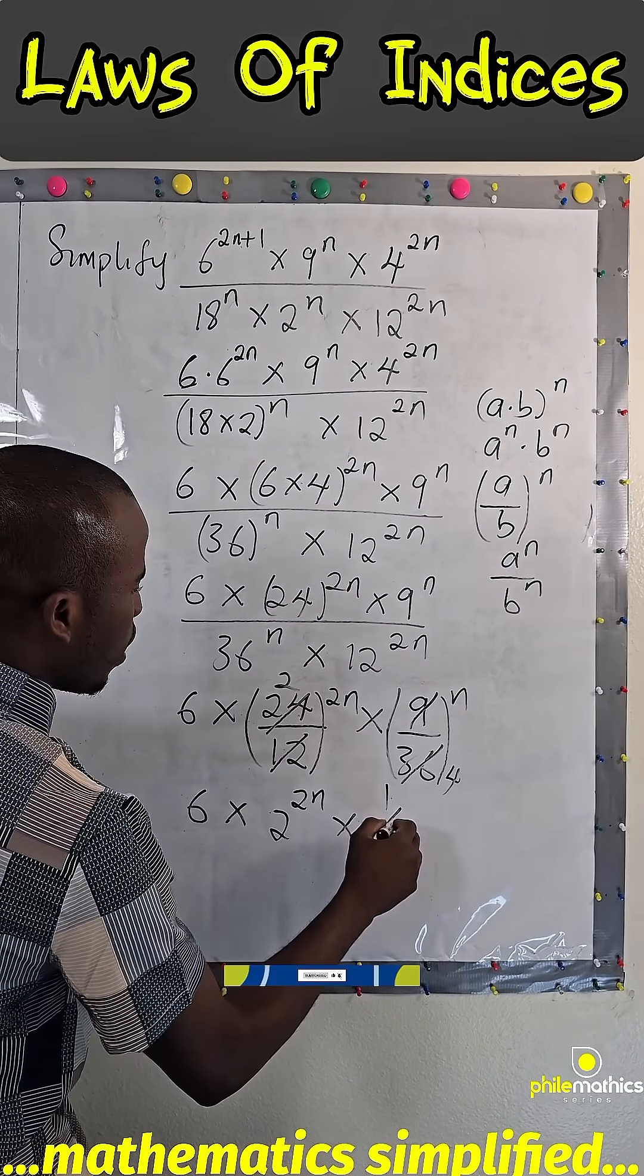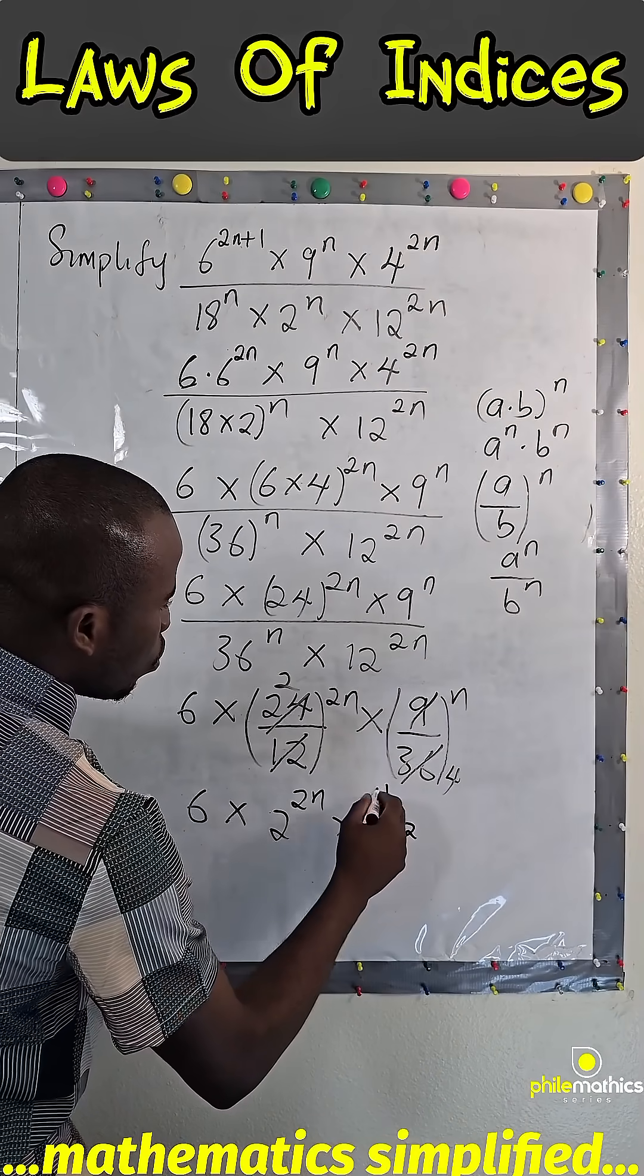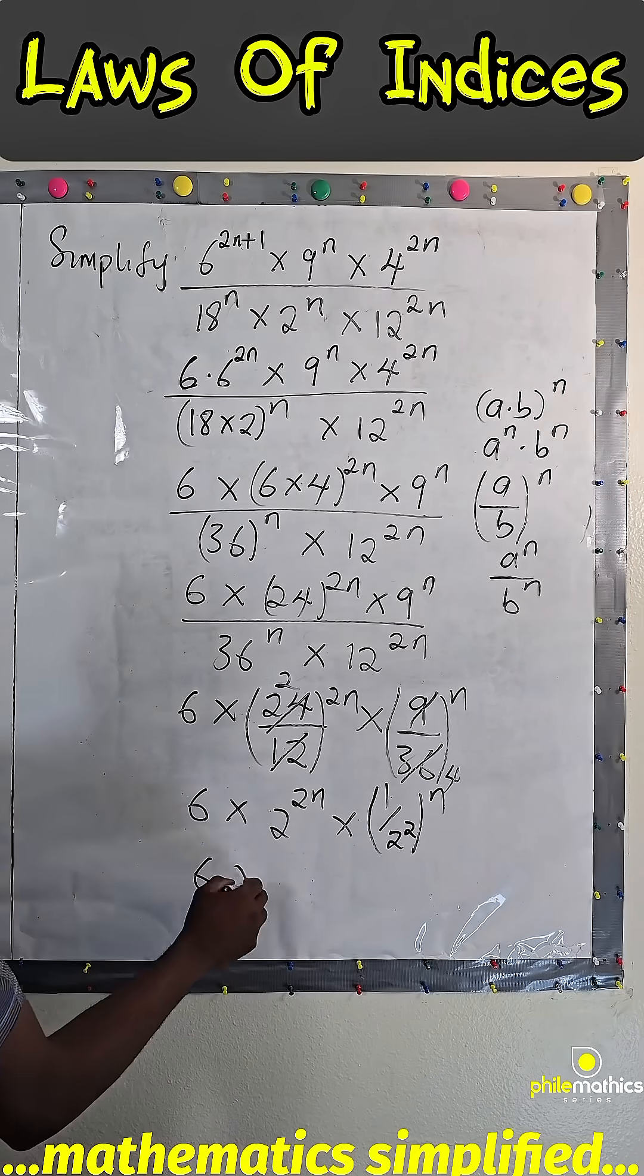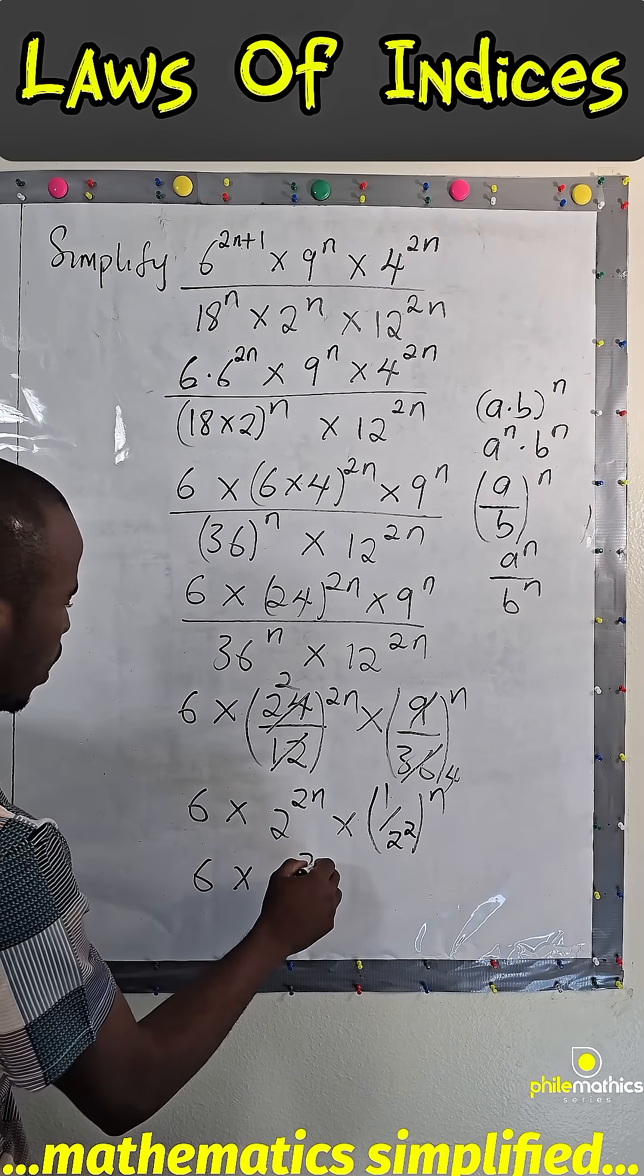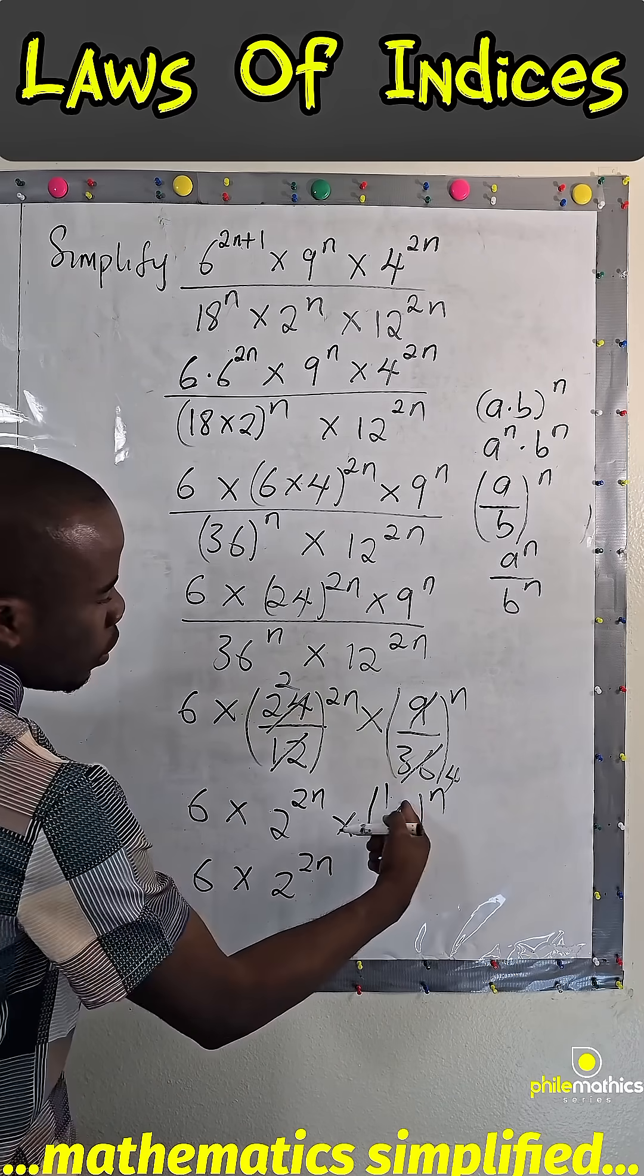times 1 over 4, and 4 can be written as 2 to power 2 raised to power n. So what I have left now is 6 times 2 raised to power 2n. This is the same as 2 raised to power minus 2, and from laws of indices